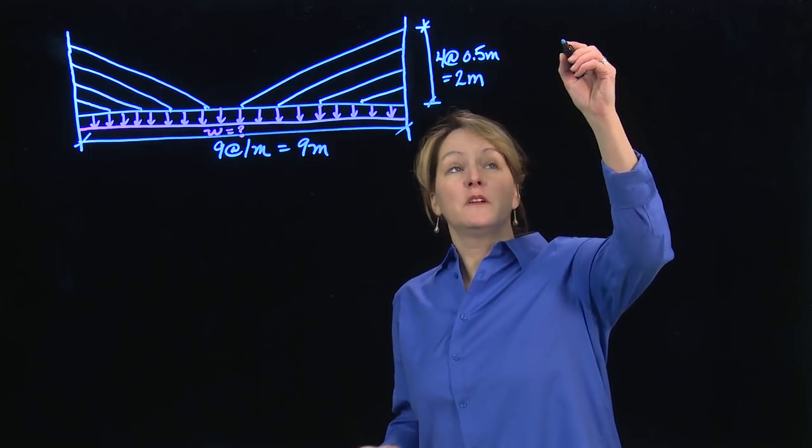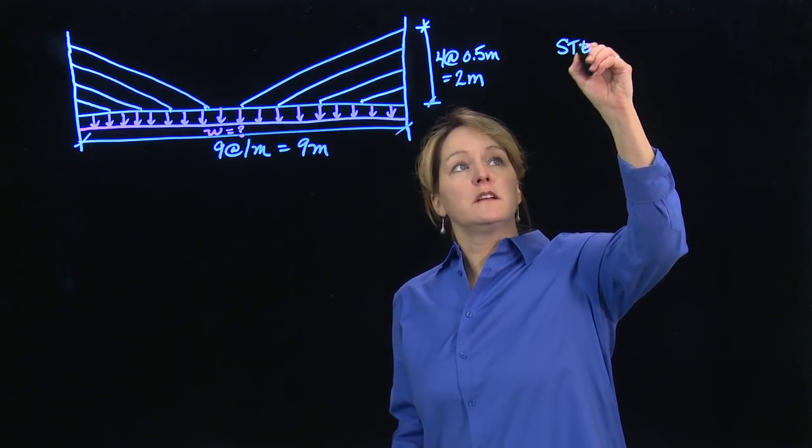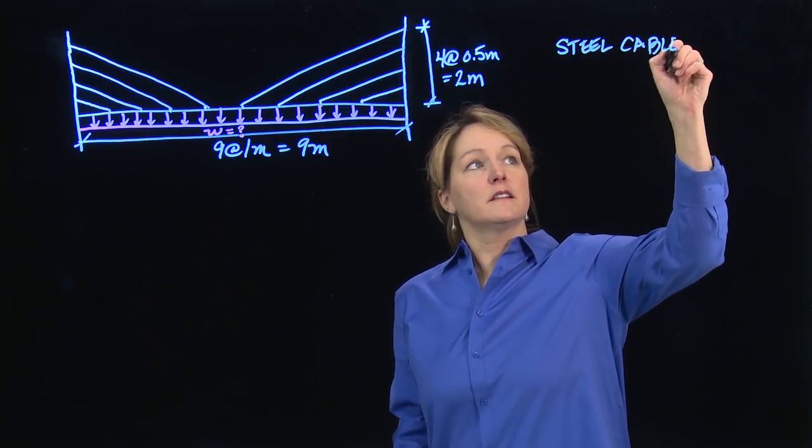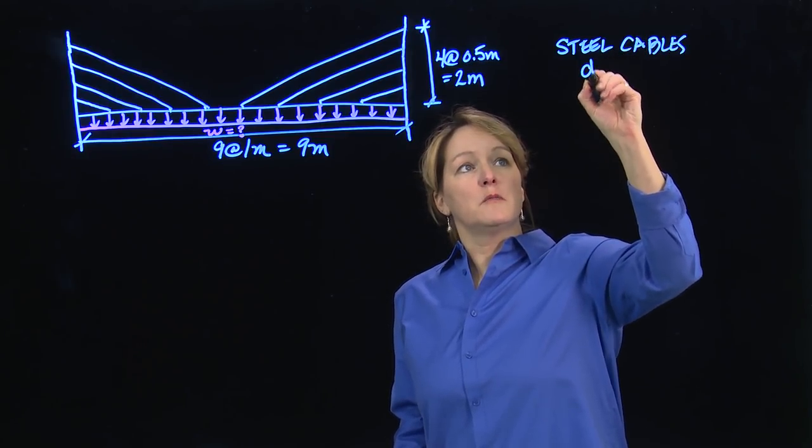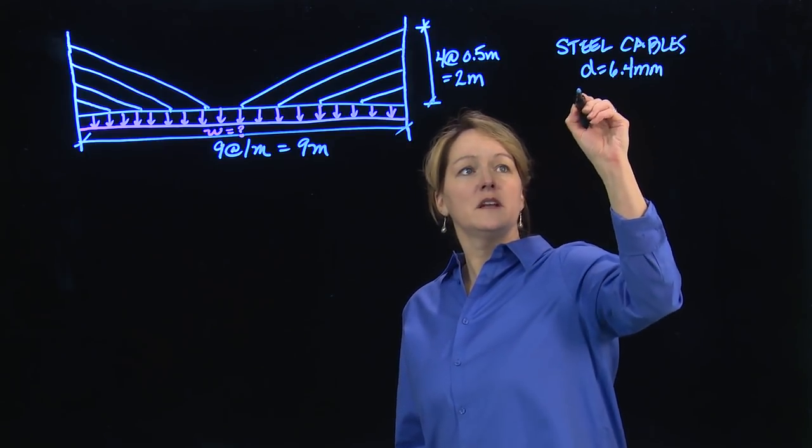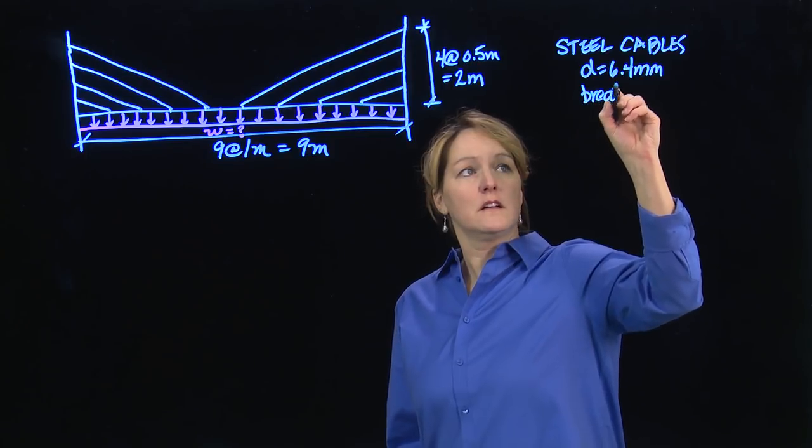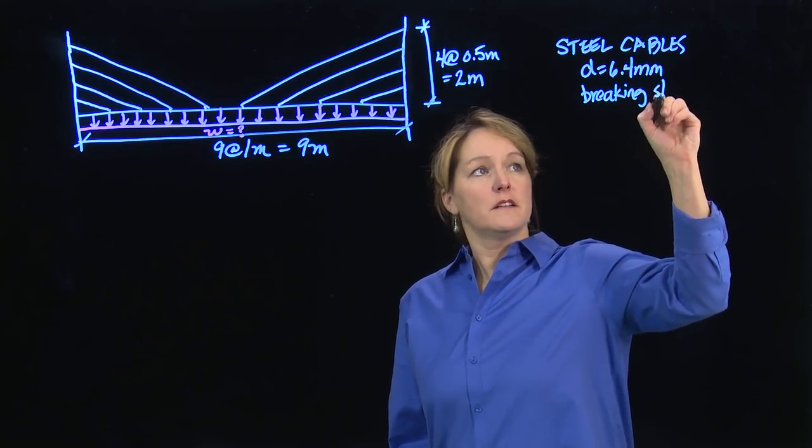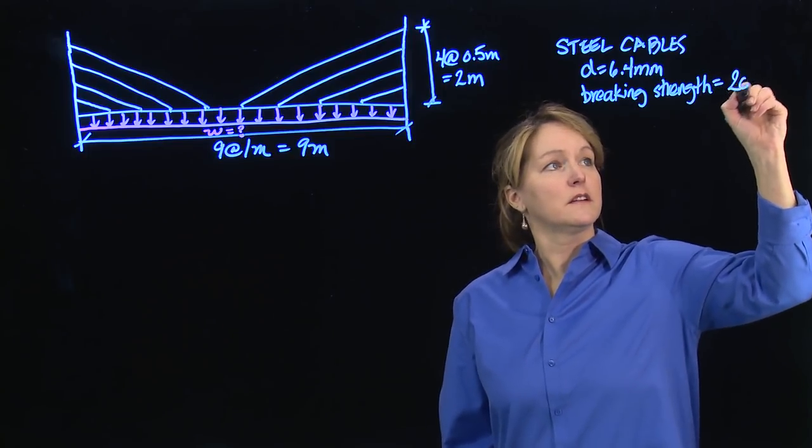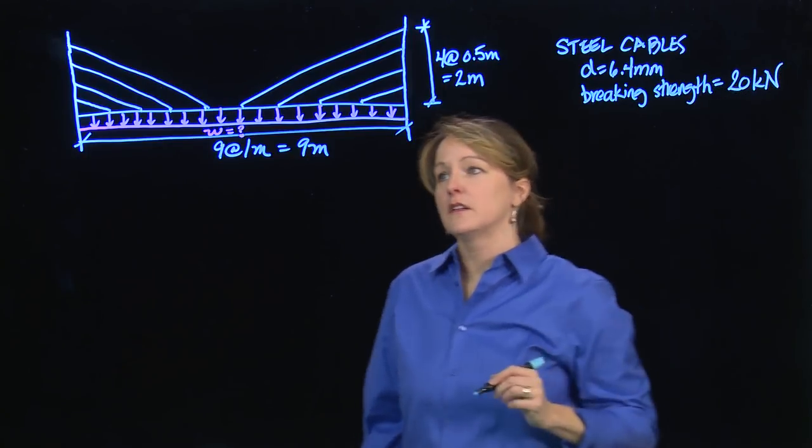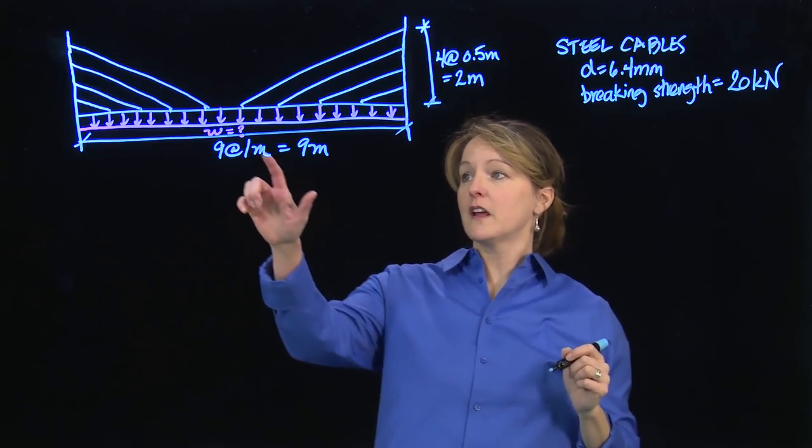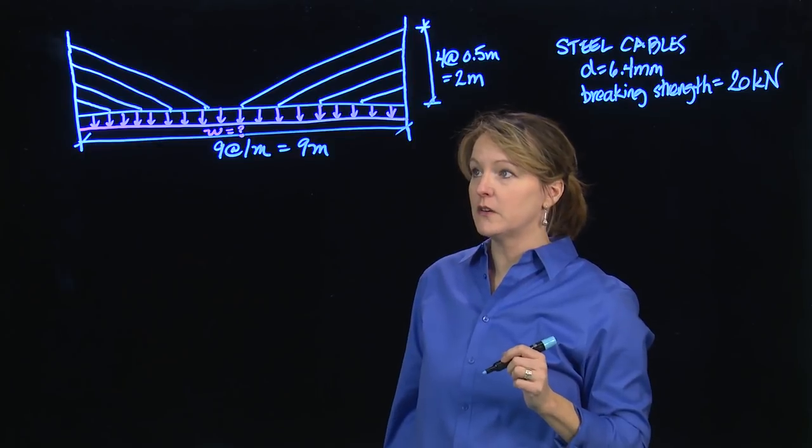I'm going to assume that we're using steel cables for all the cables. I'm going to use the same size, a diameter of 6.4 millimeters for each of the cables, and I'm going to give them a breaking strength of 20 kilonewtons. So I know that each of these cables is going to break when it reaches 20 kilonewtons, and I'm going to use that information to help me calculate what this distributed load is.